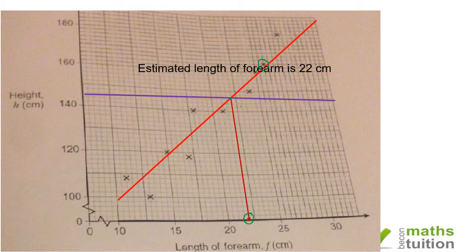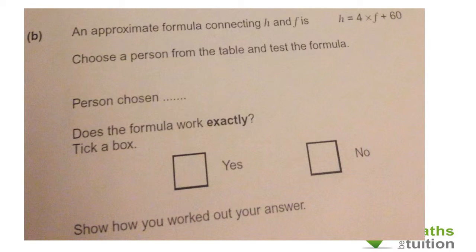It says an approximate formula connecting h the height and f the length of the forearm is shown here: h = 4 × f + 60. It says choose a person from the table and test the formula. The person I chose had a height of 164 and a forearm length of 26, which is person H.